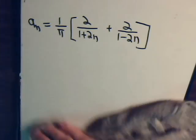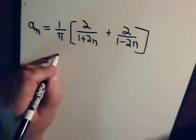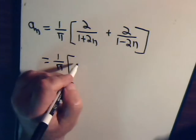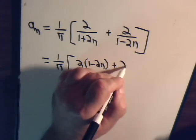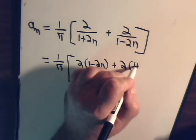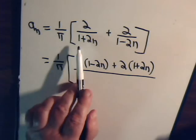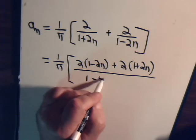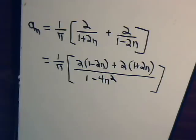So with just very simple algebra, we can get ourselves an expression for a sub n. So we'll equal 1 over π, and here we'll have 2(1-2n) plus 2(1+2n) divided by 1 divided by this times this. So we'll have 1, and the cross terms cancel, minus 4n squared.